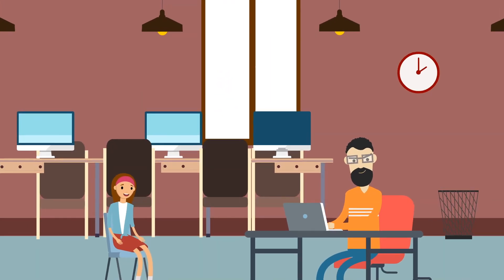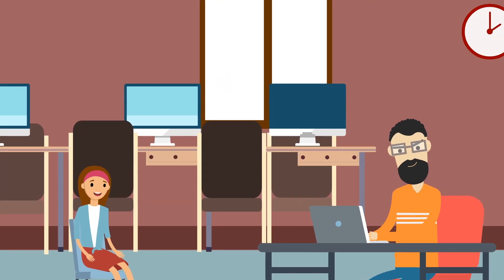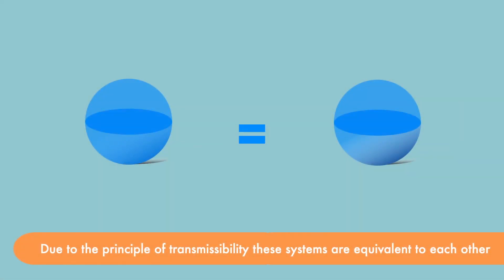We may now observe a few examples of the transmissibility principle. Here's a ball for you. It is being acted upon by three forces: P1, P2, and P3.